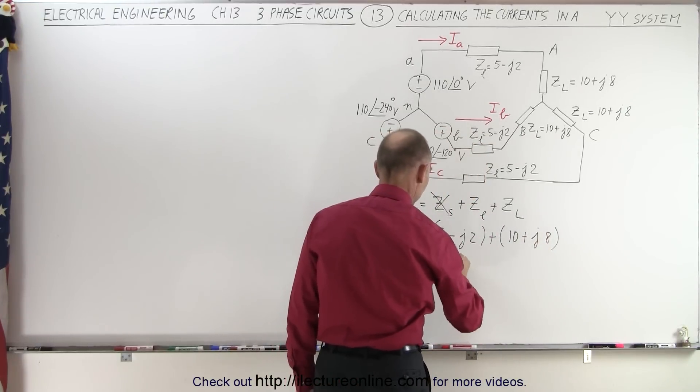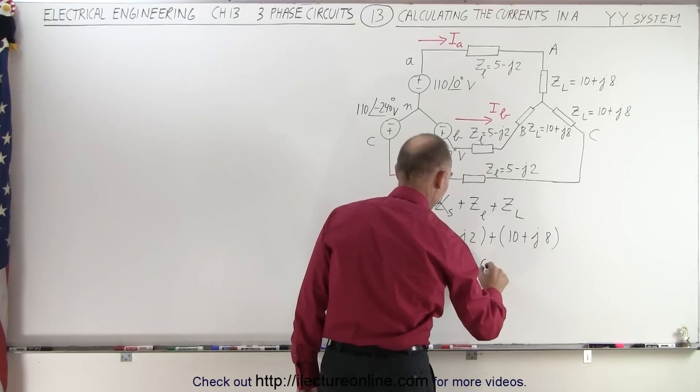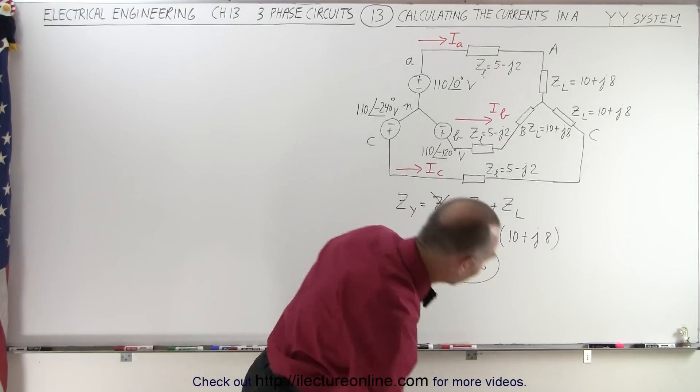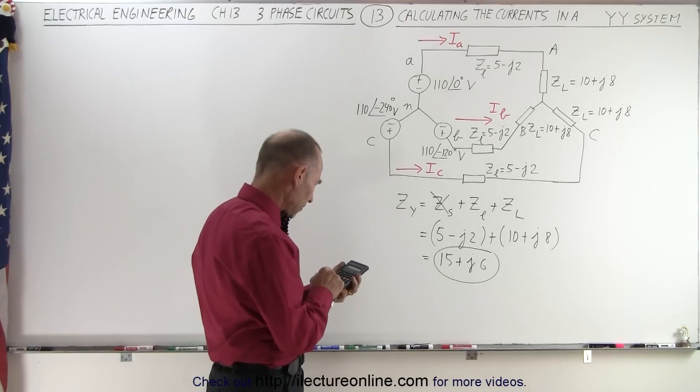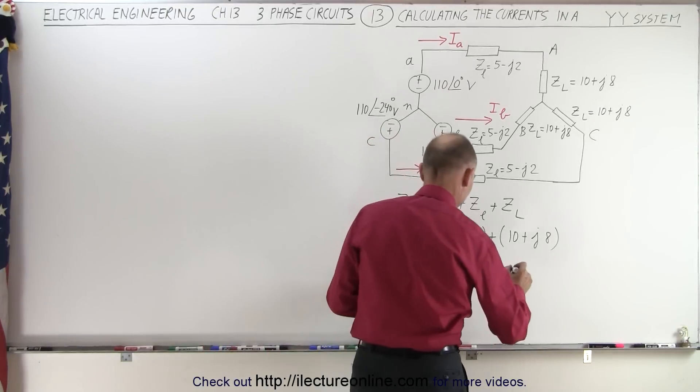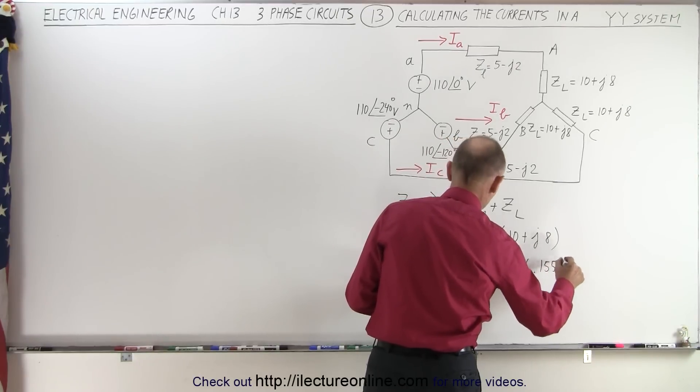So together, this is 15 plus J6. And now let's put that into the magnitude and phase angle format. So that would be 15 squared plus 36. Take the square root of that, which is 16.155. So this is equal to 16.155.